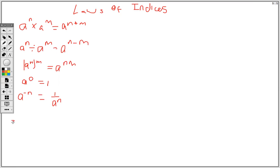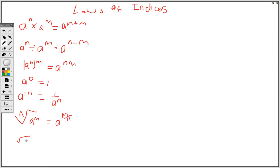If I have a to the minus n, it is the same thing as 1 over a to the n. Also, if I have the n-th root of a to the m, it's the same thing as a to the m over n. One thing you need to know is that the square root is the same thing as the power of a half. Now let's do some examples.